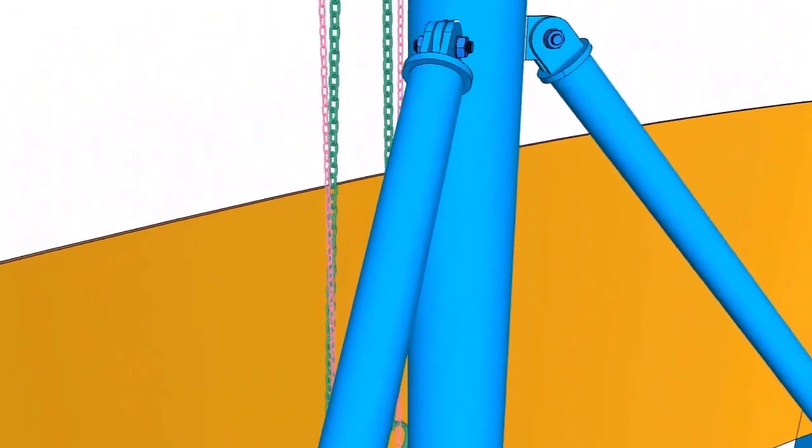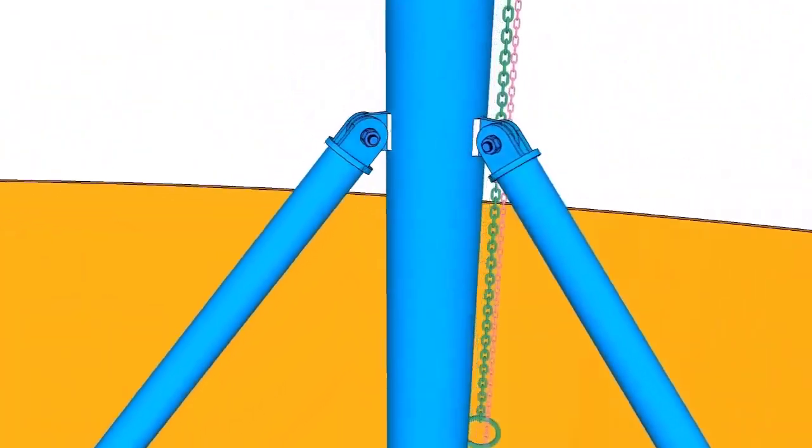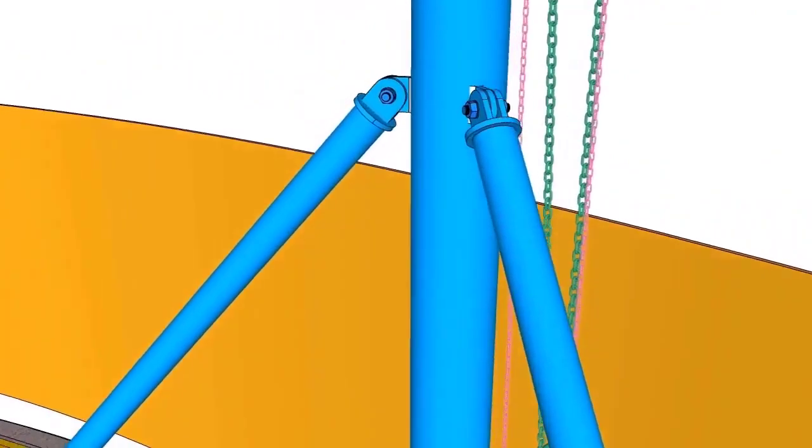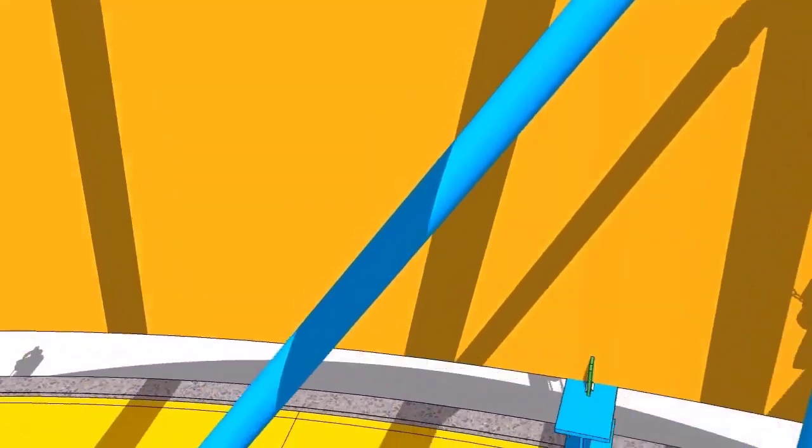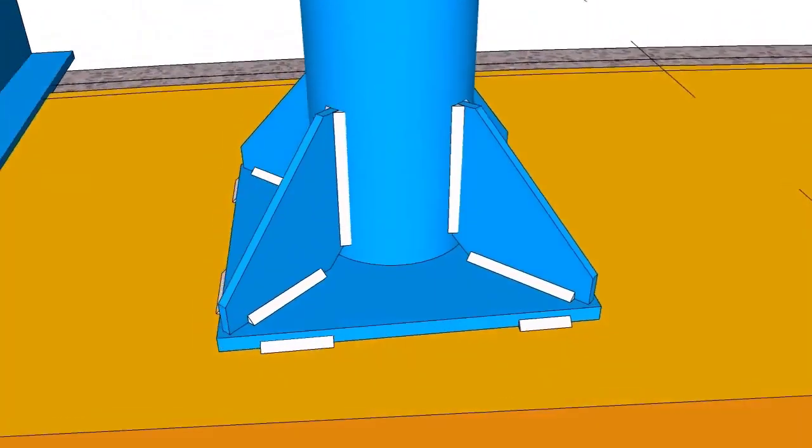The stay pipes are made from 3 inch schedule 40 pipe and the length is 3.6 meters. Hooks are made from 25 millimeters thick plates. The base plate is 450 millimeters square and is 20 millimeters thick.